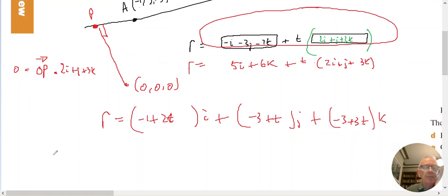So if I want to go O to P, then it's going to be minus 0 plus this. So minus 1 plus 2T in the I plus 0 minus this, sorry, minus 0 plus this, minus 3 plus T in the J, plus minus 3 plus 3T in the K. Now O to P ended up being just this because O has the coordinate 0, 0, 0.